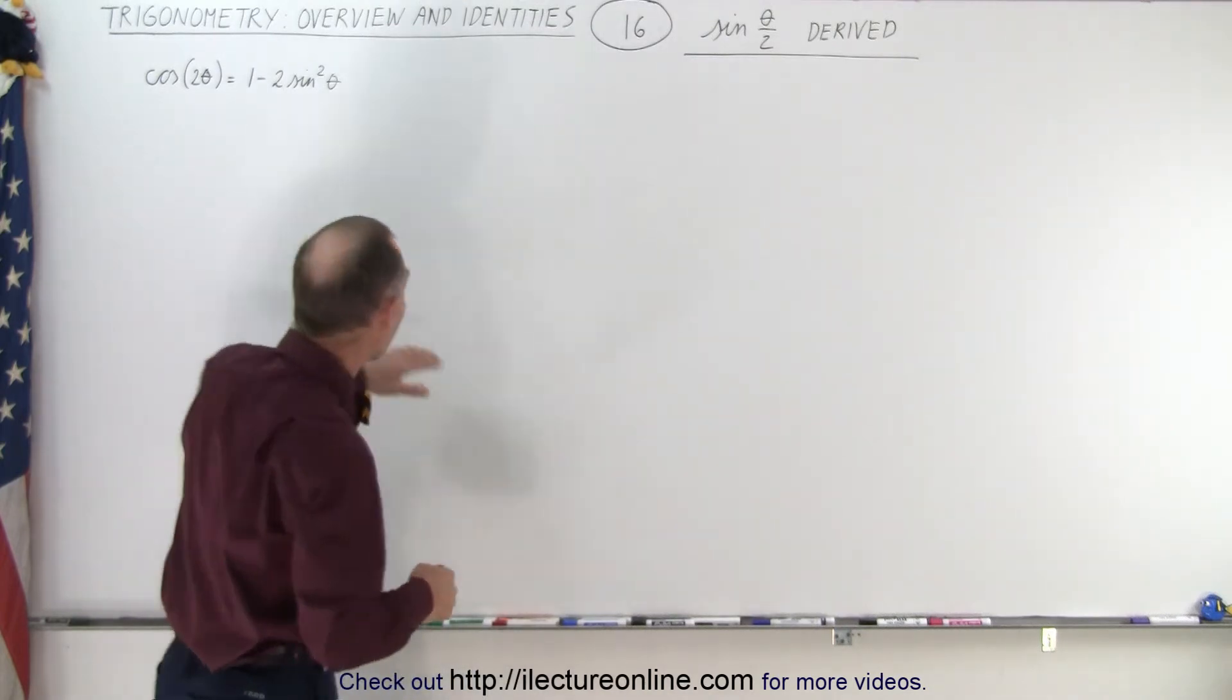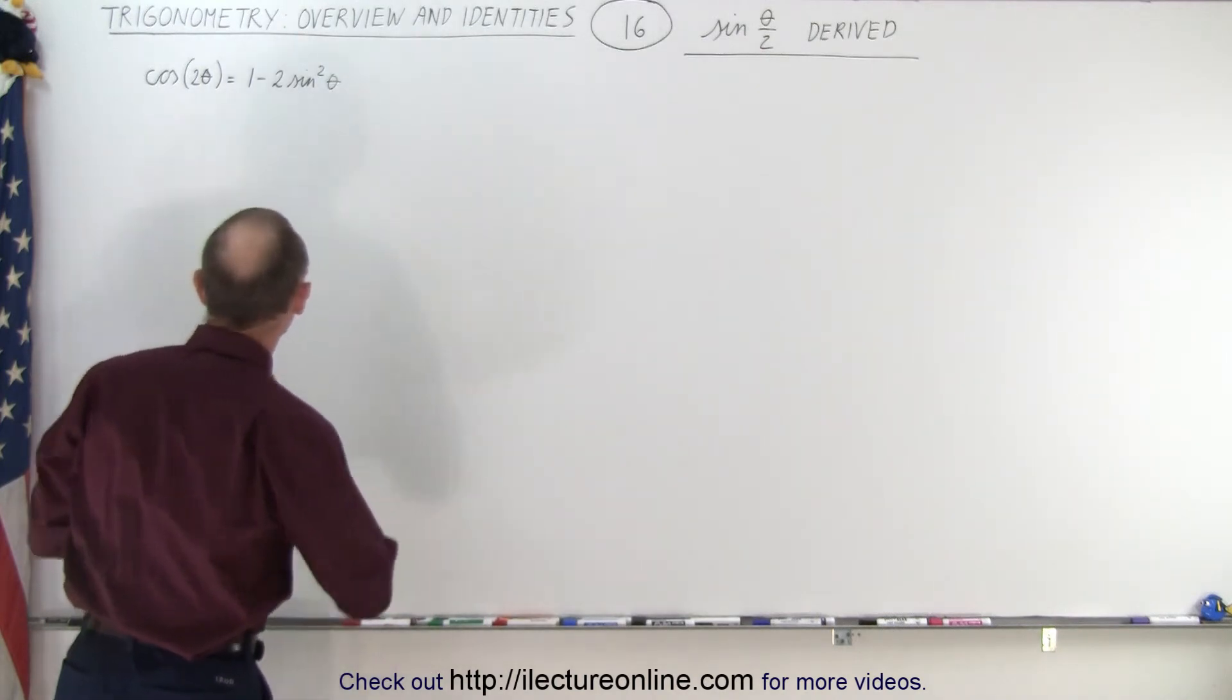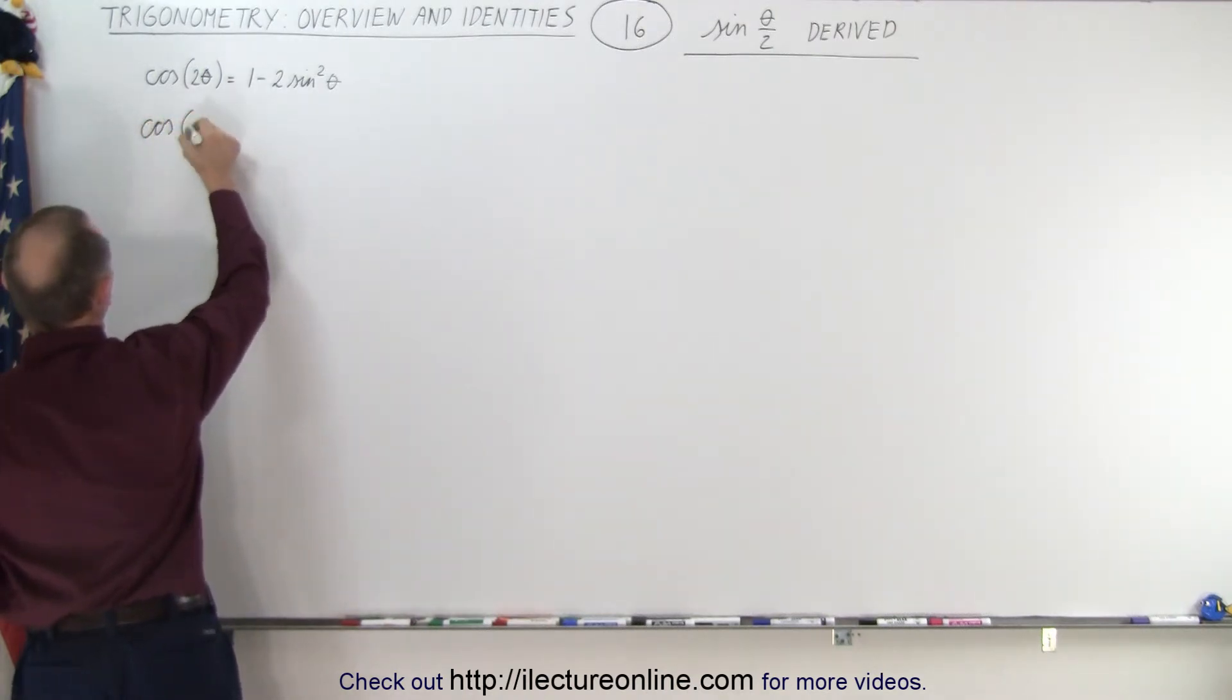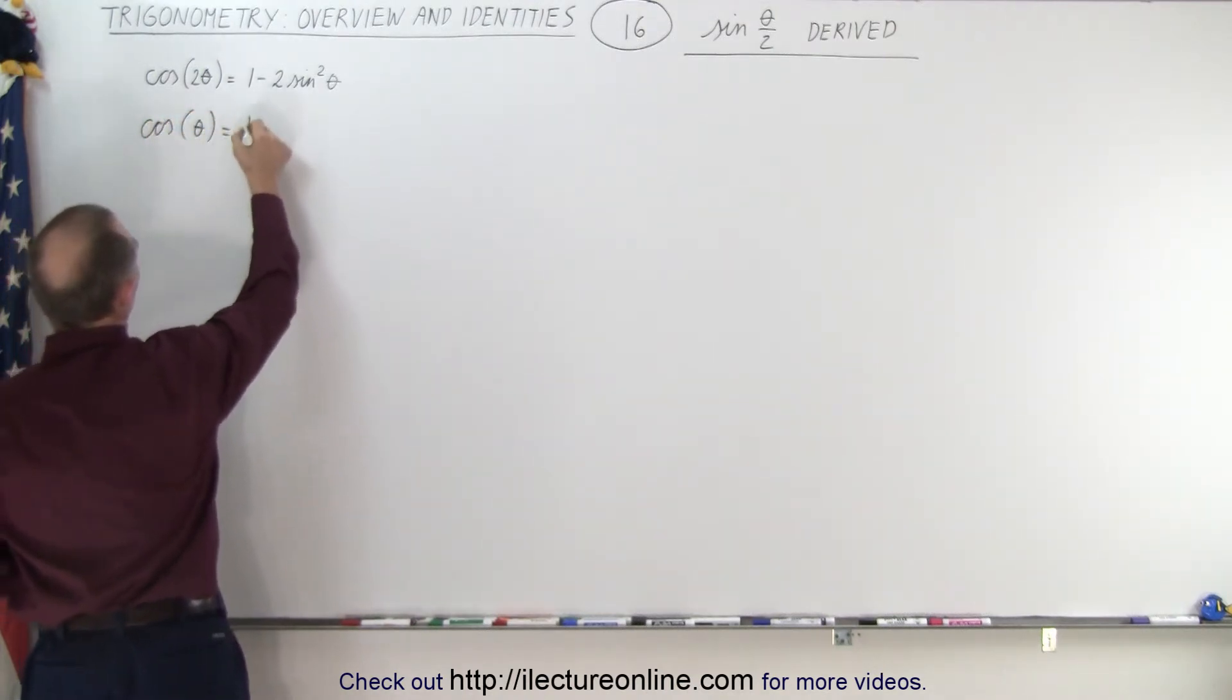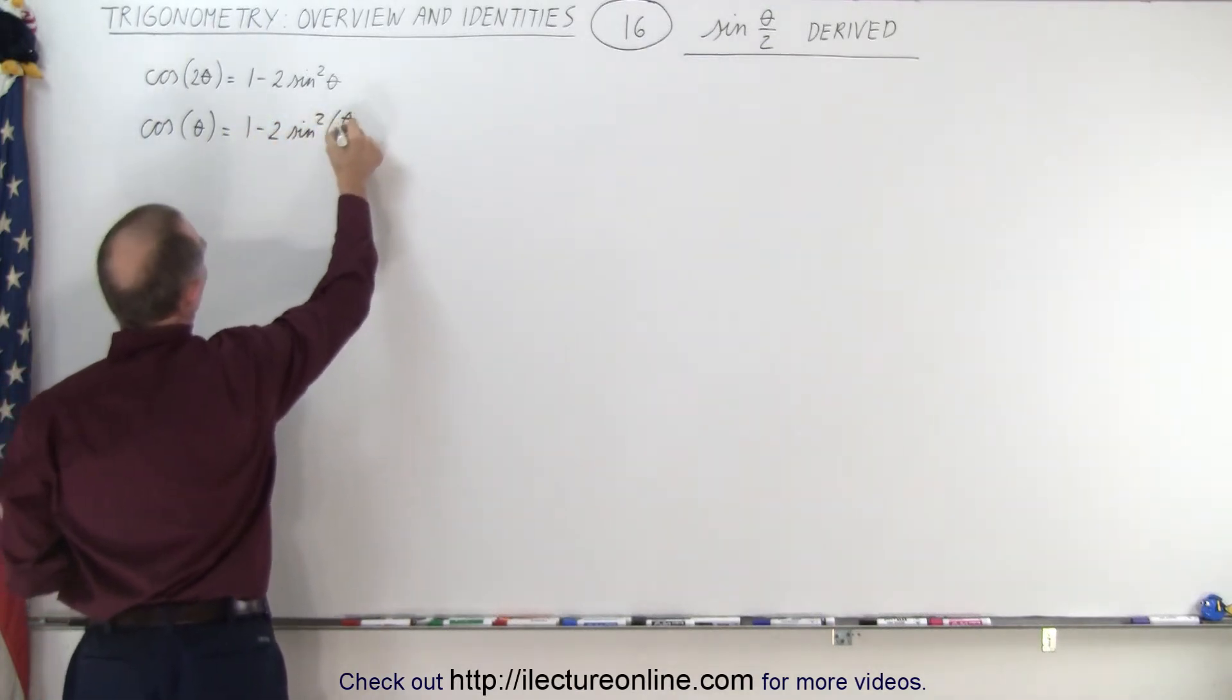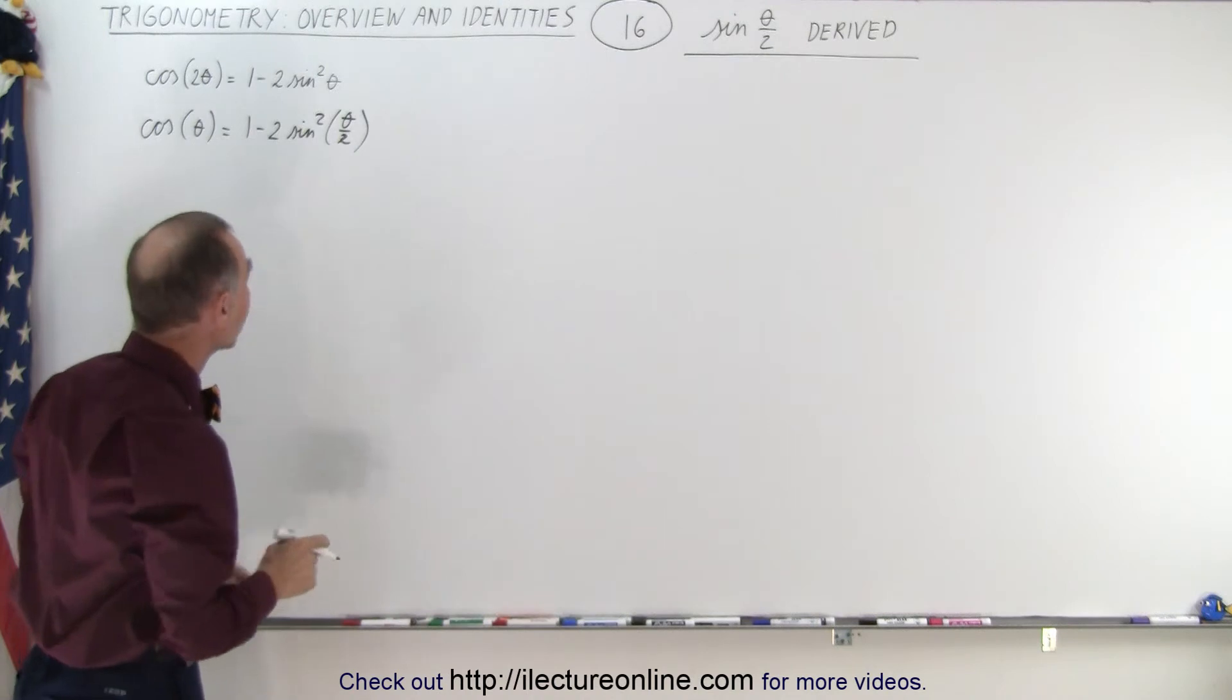So we're going to go back and rely on what we found in the previous video. If we now divide each of the angle by 2, we can rewrite this equation as saying that the cosine of theta therefore is equal to 1 minus 2 times the sine squared of theta over 2. So I simply divided on both sides the angle by 2. So that's still a valid equation.